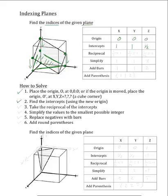Now the next step is to take the reciprocals of these intercepts. We will take 1 over the x-intercept, which is 1, and that will equal 1. We will take 1 over the y-intercept, which is 1, and that will equal 1. And we will take 1 over the z-intercept, which is ½, and that will equal 2.